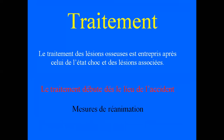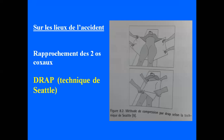Concernant le traitement des fractures du bassin : le traitement des lésions osseuses est toujours entrepris après celui de l'état de choc et des lésions associées. On ne traitera la lésion osseuse qu'après avoir stabilisé l'état du malade. Le traitement peut débuter dès les lieux de l'accident par des mesures de réanimation. Chez un traumatisé suspect de traumatisme du bassin avec déplacement important, on peut utiliser la technique de Seattle : on met le patient sur un drap que l'on ferme assez serré pour rapprocher les deux os coxaux, diminuant le saignement et améliorant l'état hémodynamique jusqu'à l'arrivée au centre d'urgence.